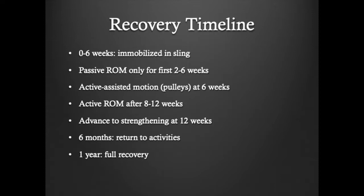Active assisted range of motion, such as the use of pulleys, begins approximately four to eight weeks postoperatively. At eight to 12 weeks postoperatively, a patient can then actively elevate their shoulder. Strengthening starts approximately three months after surgery, and full recovery can take anywhere from six to 12 months.